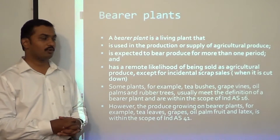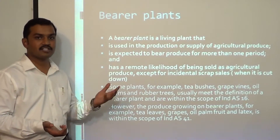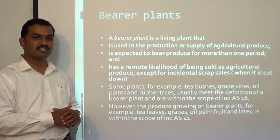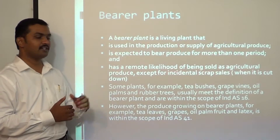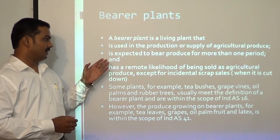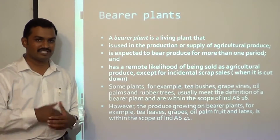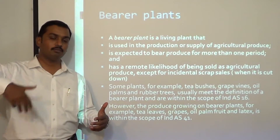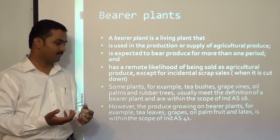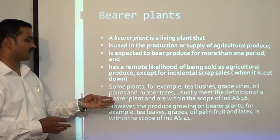What are bearer plants? Bearer plants are actually within the scope of IAS 16. A bearer plant is a living plant used in production or supply of agricultural produce, expected to bear produce for more than one period, and has a remote likelihood of being sold as agricultural produce except for incidental scrap sales — it is like machinery that keeps generating agricultural produce for more than one year. Examples: tea bushes, grape vines, oil palms, and rubber trees usually meet the definition of a bearer plant.